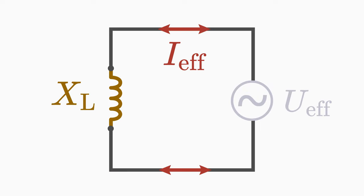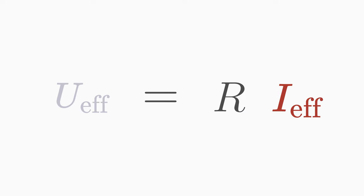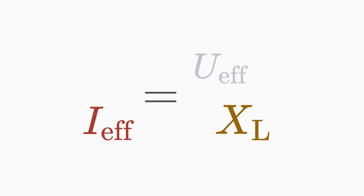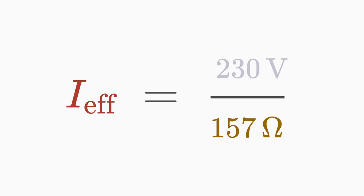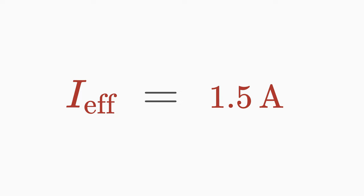To determine the RMS current flowing through the coil, use the URI formula. Instead of using the ohmic resistance R, use the inductive reactance. Rearrange the equation for current. Insert the 230 volts RMS voltage and 157 ohms. Then you get an RMS current of 1.5 amperes.